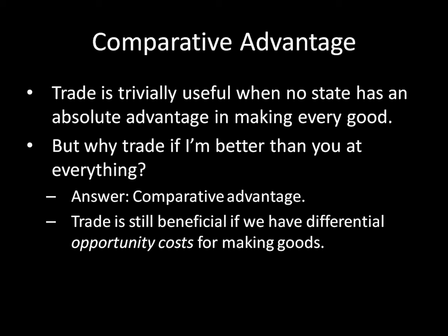We'll see that when we start looking at production charts. The important idea here is that trade is still beneficial if we have differential opportunity costs for making goods. An opportunity cost is simply what you have to forego or give up to take a particular action. For example, your opportunity cost for watching this video is whatever you would have done had you not watched it — maybe go to the kitchen and make yourself a ham sandwich. In our examples, the opportunity costs are going to be not making a bottle of wine or not making a bottle of tequila.